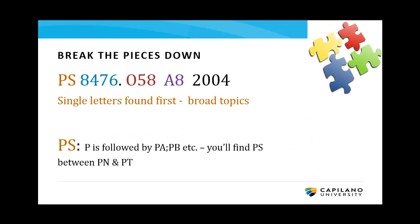This particular call number has five meaningful chunks of information. First, start by looking at the letter or letters at the very beginning — these represent broad subject areas. For example, P is for books on the overall topic of language and literature. Library of Congress, or LC, call numbers often include a second letter if the book is on a narrower topic. For example, PS is where you'll find books on American and Canadian literature.